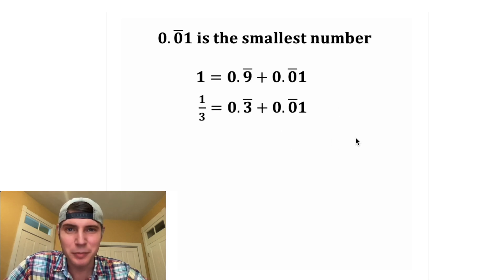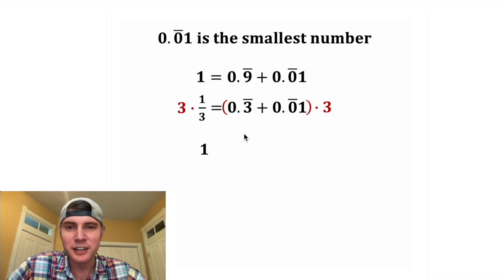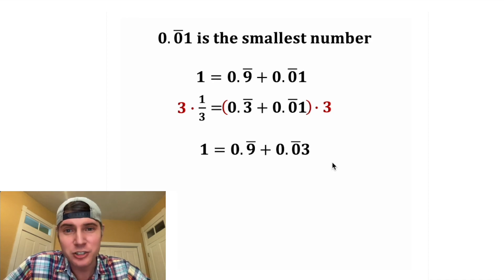Well, this is kind of interesting. Let's do some math with this. If we multiply both sides by three, on the left side we get one, and on the right-hand side we can distribute this. 0.3 recurring times three is 0.9 recurring, and 0.0 recurring one times three would be 0.0 recurring three.